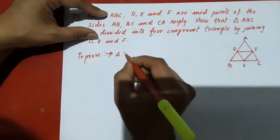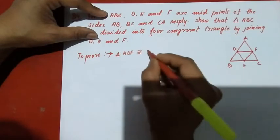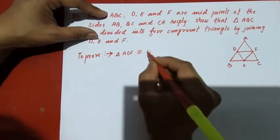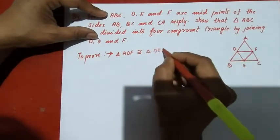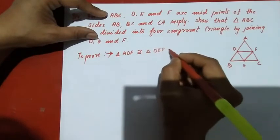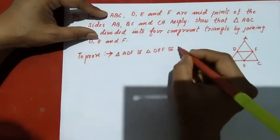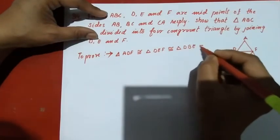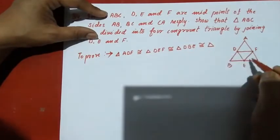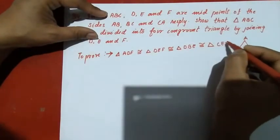The four congruent triangles are: triangle ADF, triangle DEF, triangle DBE, and triangle CEF. These four triangles are all congruent to each other.